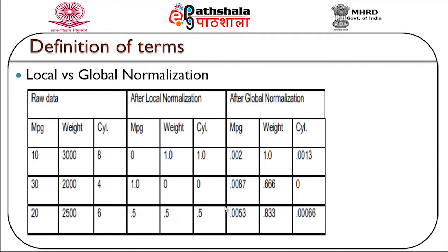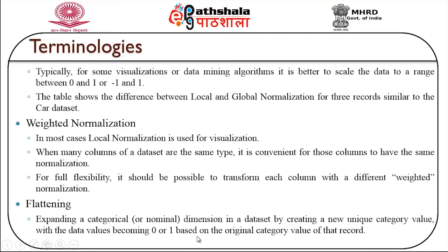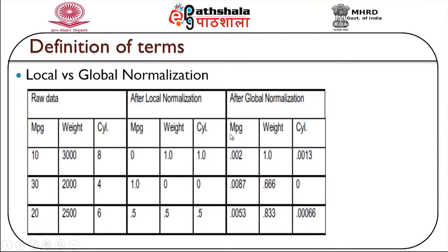An example shows tabular data with raw data including MPG, weight and cylinder values, followed by local normalization where values are represented within a certain range, and global normalization where all values are represented within a wider range. It is generally better to scale the data to a range between 0 and 1 or −1 and 1 for some visualizations or data mining algorithms. In global normalization, values lie between −1 and 1, while after local normalization, values lie between 0 and 1 for each dimension.